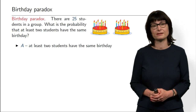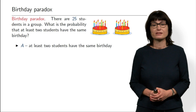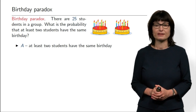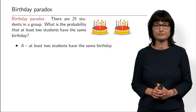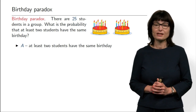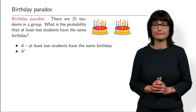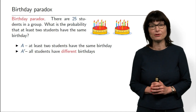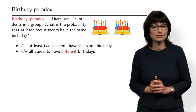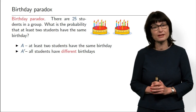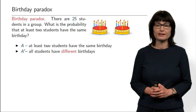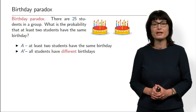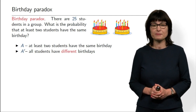A much more convenient event is the complement — the opposite event. The opposite event is that all students have different birthdays, so no student is born on the same day as a classmate. This event is much easier to compute because now all students must have different birthdays, and we can use the multiplication rule.